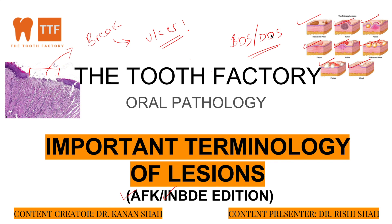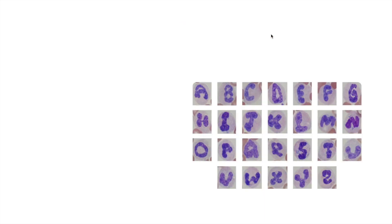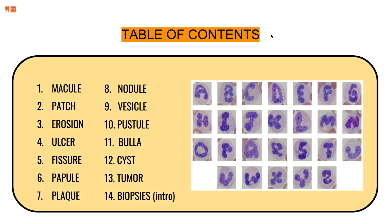With Dr. Kanan Shah's presentation and my voice, let's get into the ABCDs of oral pathology. Today we're going to be talking about 13 different types of classifications that any histological or pathological lesion can fall into: macule, patch, erosion, ulcer, fissure, papule, plaque, nodule, vesicle, pustule, bulla, cyst, and tumor. Some of these may be overlapping, however they have their own significance, especially when we talk about biopsies.